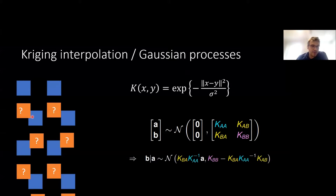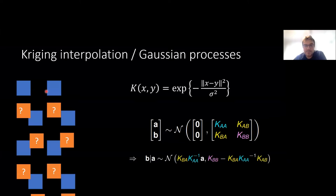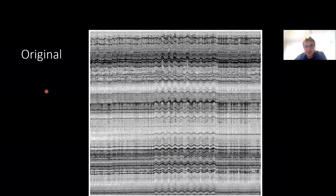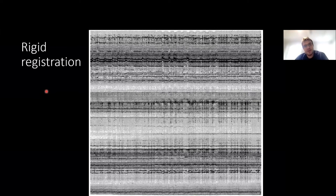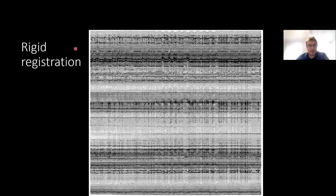With those two steps — drift estimation and reinterpolation to correct for drift — we can go back to our original data and look at what the same drift map looks like when run a second time on the registered dataset. The biggest patterns have gone away. There are a few little things left here and there — you can see maybe a little bit of motion remaining. Why would that be? Probably because the tissue around the probe does not move in a rigid way.